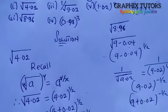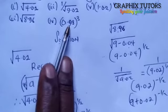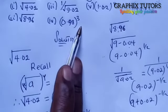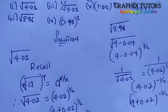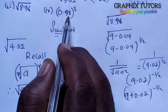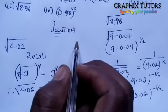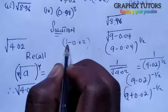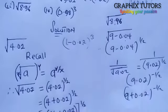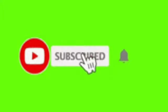For 0.98^3: 0.98 is close to 1, so 1 − 0.98 = 0.02, giving (1 − 0.02)^3. Subtract to get this value and expand accordingly. If you find this video helpful, don't forget to click the subscribe button. Thanks for watching.